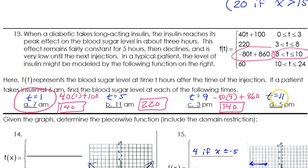And finally, a t value of 11. A t value of 11, that puts us in this zone right here. So that tells us that it's going to simply be 60.